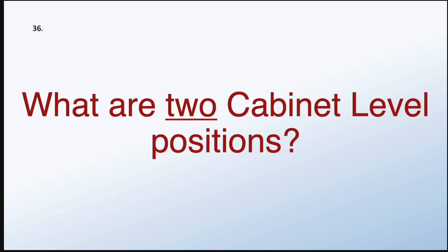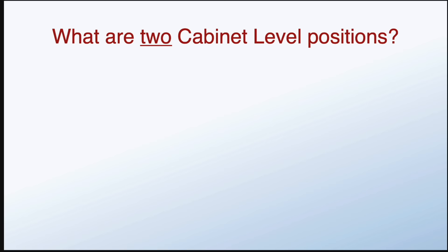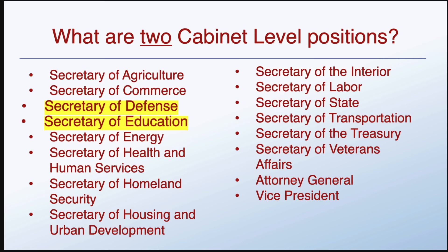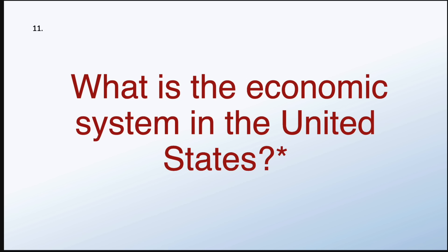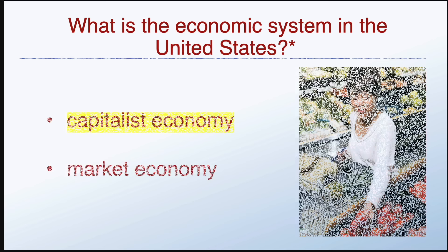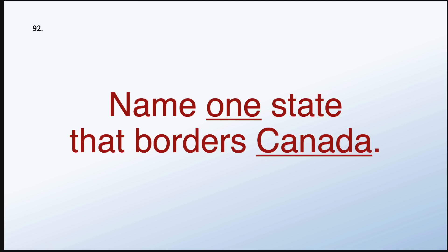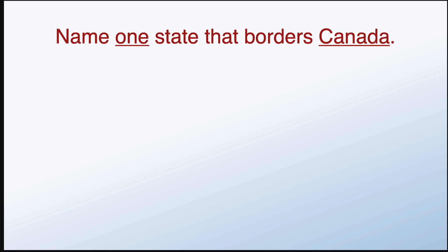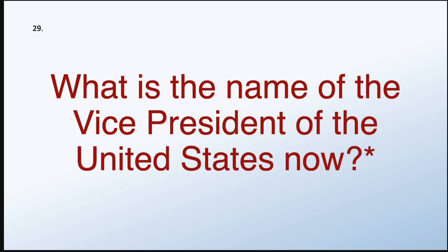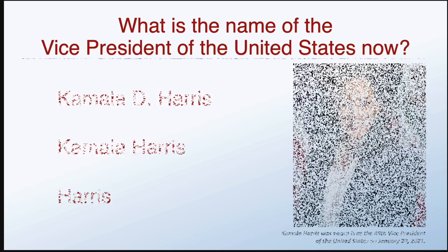What are two cabinet-level positions? Secretary of Defense, Secretary of Education. What is the economic system in the United States? A capitalist economy. Name one state that borders Canada. New York. What is the name of the vice president of the United States now? Kamala Harris.